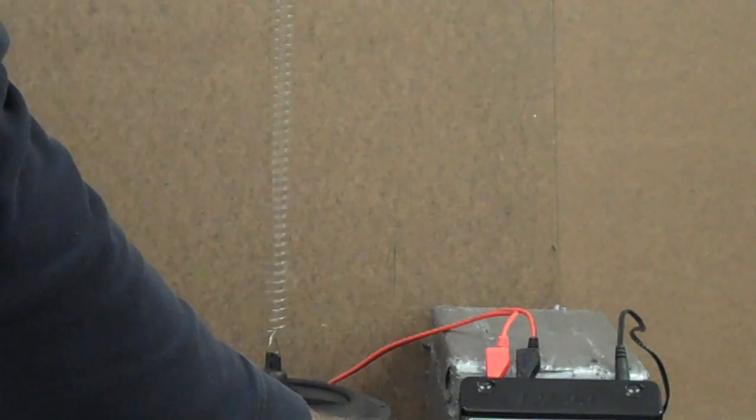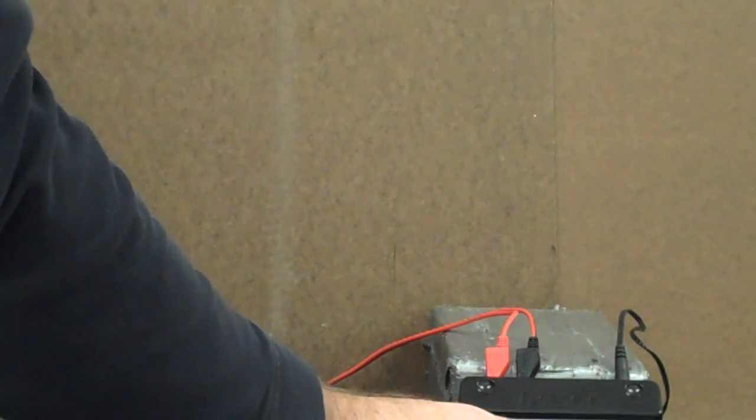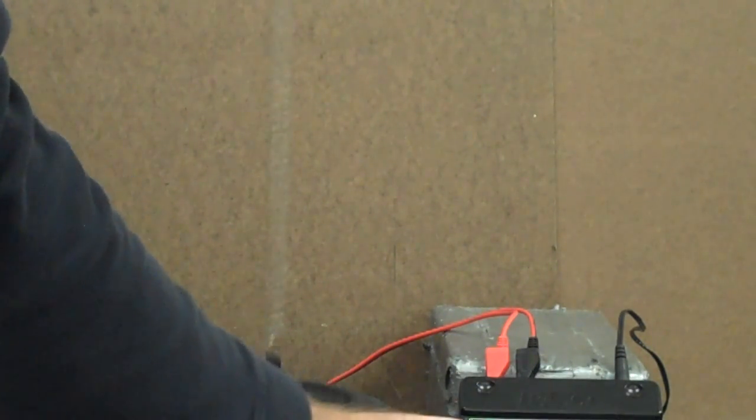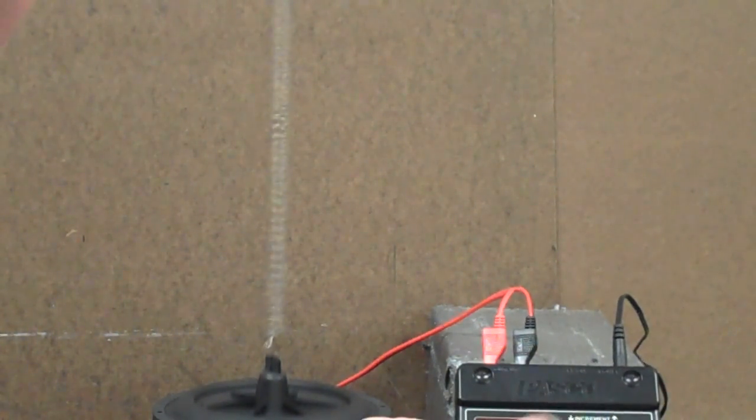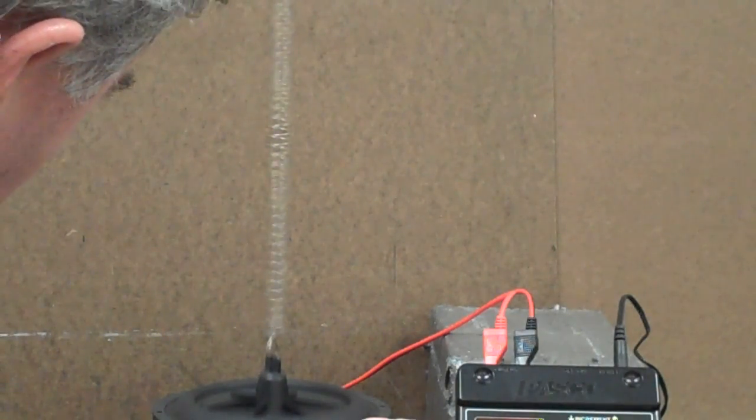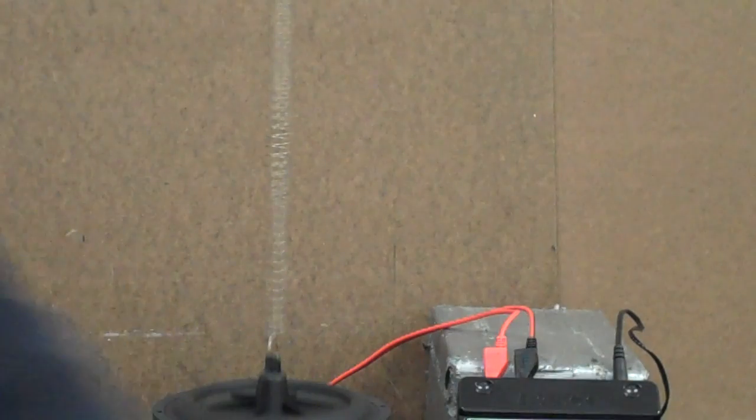So what I'm going to do is take this sine wave generator and increase the frequency up to around 35 hertz or thereabouts. As I get to 35 hertz, one thing that you begin to notice is we begin to generate a standing wave right around 32.5 hertz, there we go, is where we hit it.